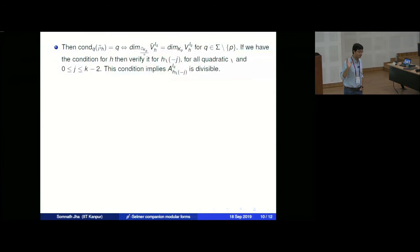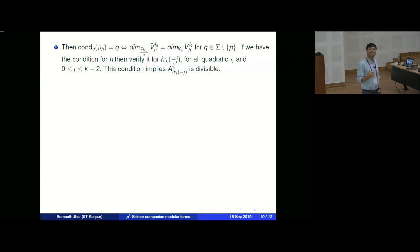That is the short idea for primes not above p. Primes above p are the difficult case, and we have two approaches depending on whether the reduction is ordinary or supersingular. The nature of the Selmer group (and Iwasawa theory) is very different in these two cases. If it is ordinary, we compare it to what is called the Greenberg Selmer group.